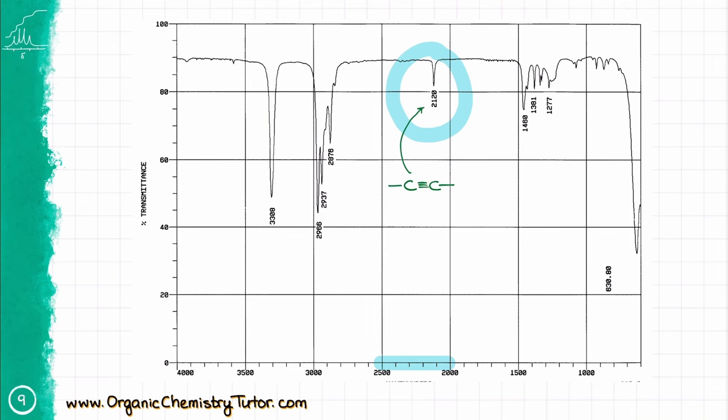The next important region we are going to look at is around 2500 to 2000 reciprocal centimeters. This is where the triple bonds live. Those signals are typically pretty weak and can sometimes completely disappear.